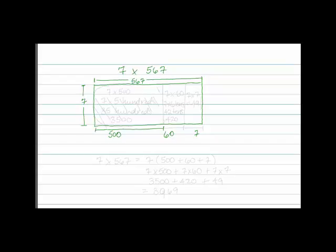Here's going to be 500 from here to here, 60 might be from here to here, and 7 is from here to here. Again, this isn't drawn to scale, but it gives us an idea of how to look at this as an area model.